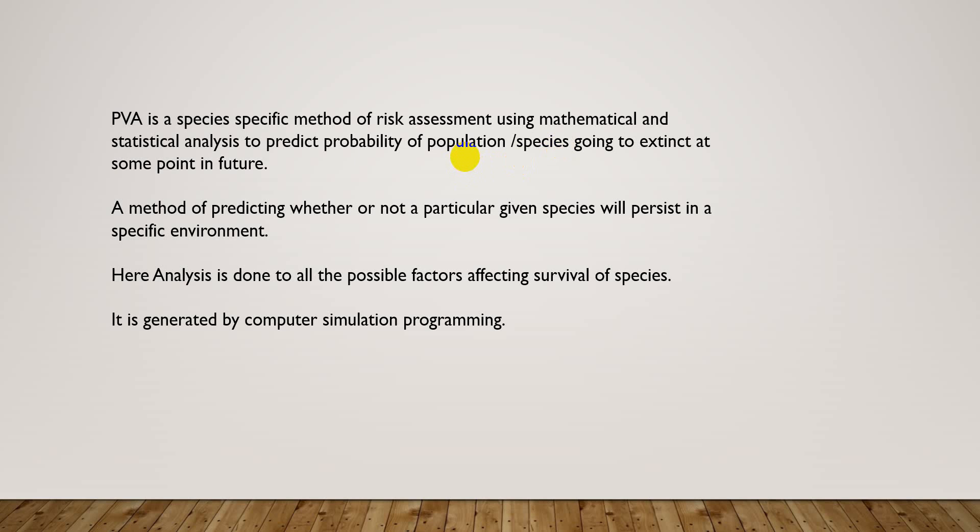Some species cannot adapt to changes in their environment, to new predators, or new disease. Catastrophes such as fire, flood, drought, or epidemic may reduce population size to a small fraction of their average level, which may result in the extinction of organisms.